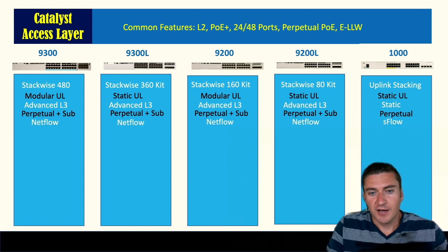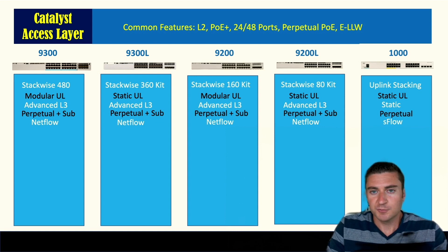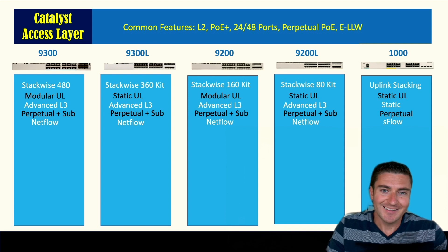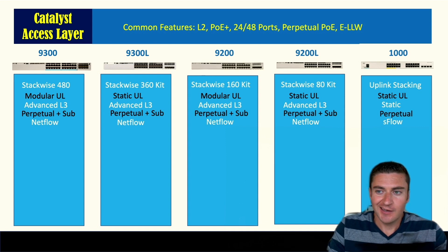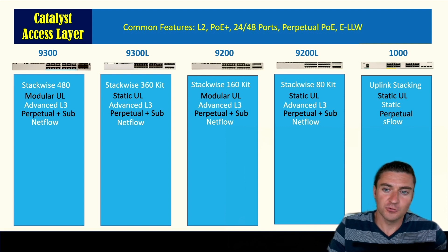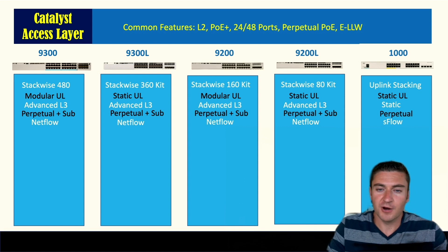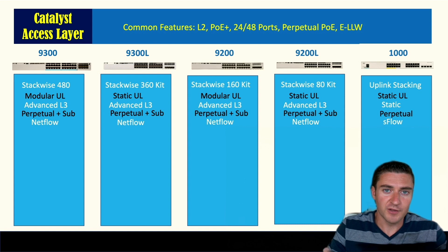For NetFlow, the 9300 down to the 9200L support full NetFlow on all ports and uplinks. The Catalyst 1000 only supports S-Flow, which is a sampled type of NetFlow. S-Flow is fine for general traffic statistics, but if you need full session visibility or security threat detection, you'll need a switch that supports full NetFlow.